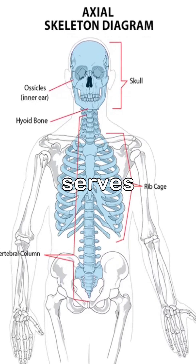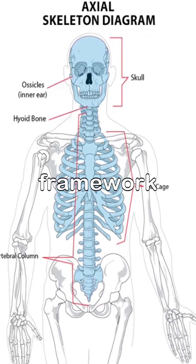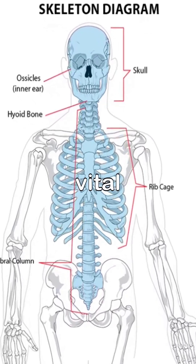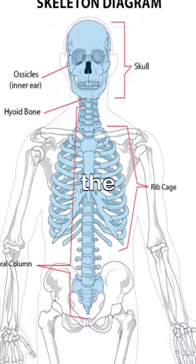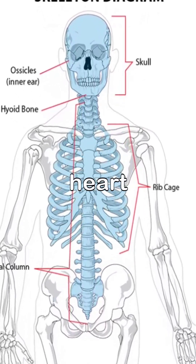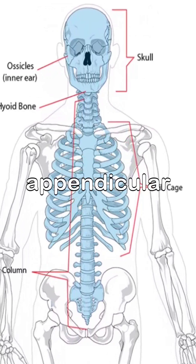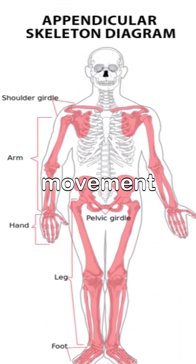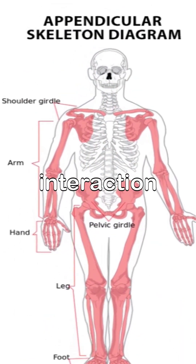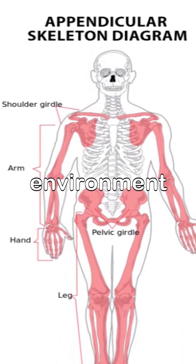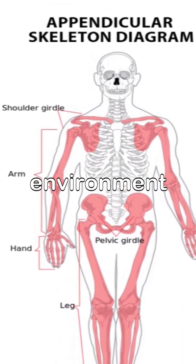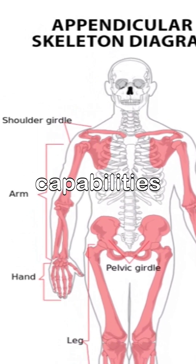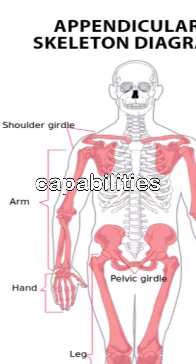The axial skeleton serves as the central framework of the body, protecting vital organs like the brain and heart, while the appendicular skeleton supports movement and interaction with the environment. How does this structural difference impact our physical capabilities?